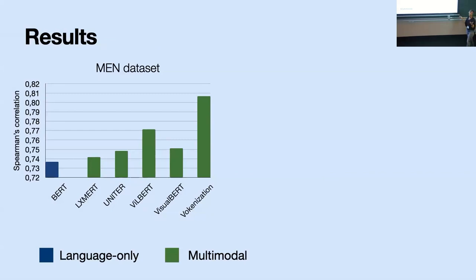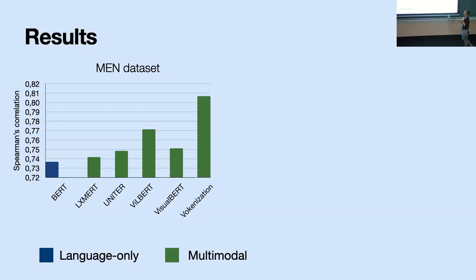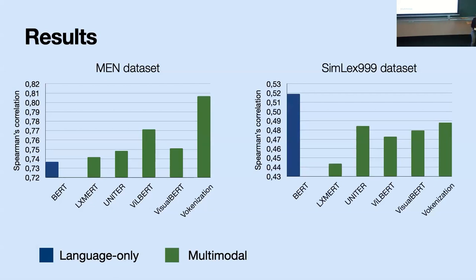We ran an experiment with a bunch of human semantic similarity datasets and a bunch of multimodal models, also comparing to text-only LLMs. Looking at the results for one of these datasets: all the models that are multimodally trained — trained with images and language — give higher correlations, quite high over 0.7, than an LLM that is language-only. This looks in accordance with our expectations: they have more information, so it seems pretty good.